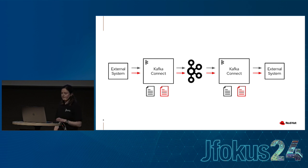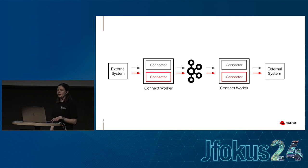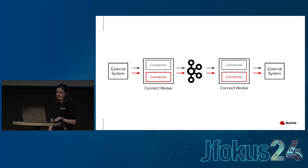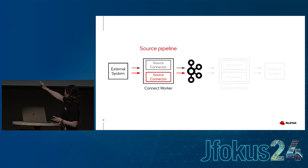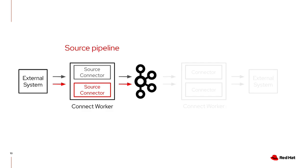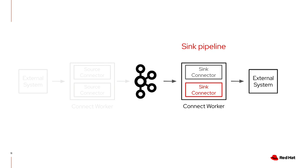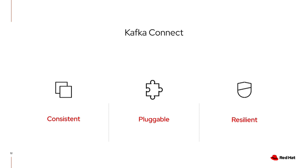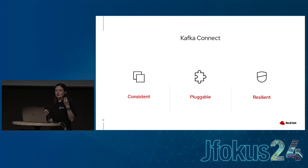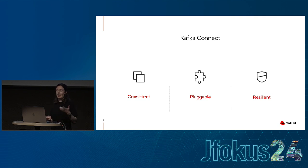Kafka Connect lets you build complicated data pipelines using Kafka without having to write any code upfront. When you're deploying Kafka Connect, you're deploying a Kafka Connect worker — the container running Kafka Connect — and then you're running one or more connectors. A connector gets data from your external system and puts it in Kafka, or pulls out of Kafka into your external system. We call getting data into Kafka a source pipeline, and pulling data out of Kafka a sink pipeline. Connect is consistent, pluggable, and resilient because it uses Kafka to store its state.